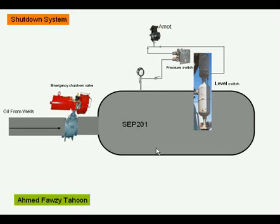The pressure switch is connected with the AMOD and saves the AMOD supply signal at normal pressure, and vents it at high pressure. The output signal of the AMOD is transferred to the ESD to maintain the ESD open.